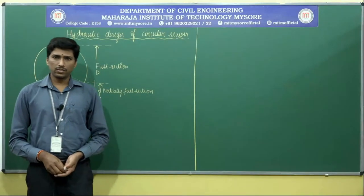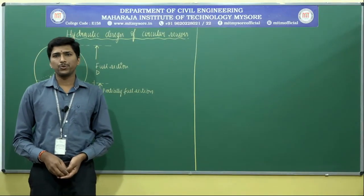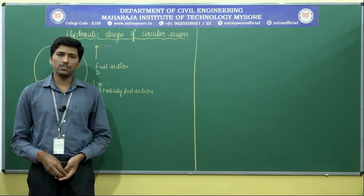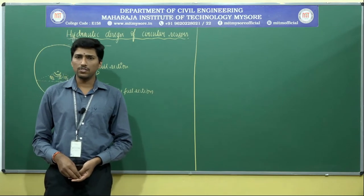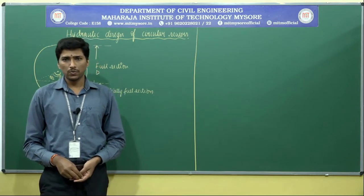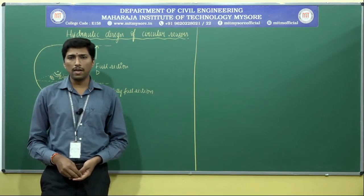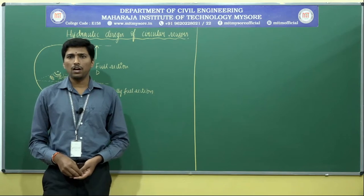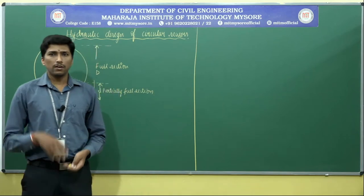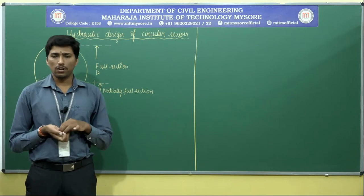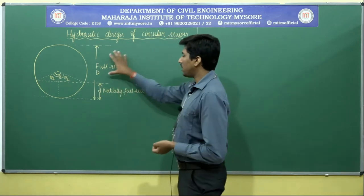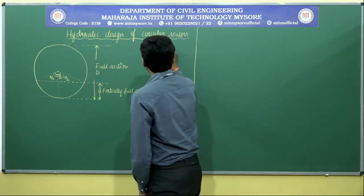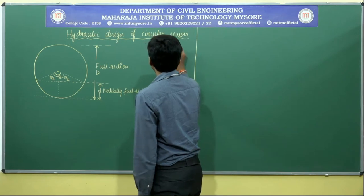Good morning, welcome back to Session 4 of Module 2. In this part of the session, you will study the hydraulic formulas utilized for designing sewers running under partially full conditions, half-full conditions, or any given ratio. For any discharge condition, the basic hydraulic formula is q = A·V.